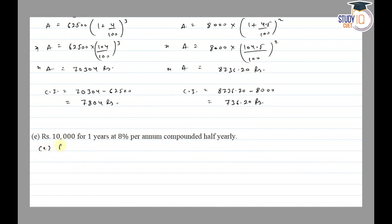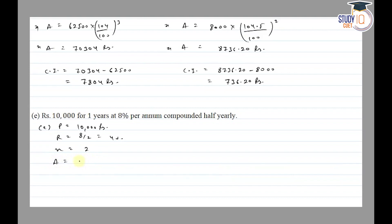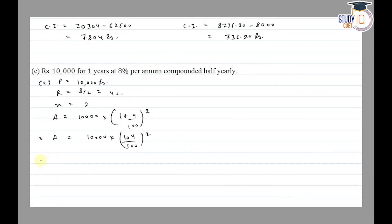In Part E, Principal given is ₹10,000, compounded half yearly. Half yearly rate is 8 divided by 2, equal to 4 percent, and for 1 year there are 2 half-yearly periods. Amount is equal to 10,000 into (104/100) squared, which gives ₹10,816. CI is equal to Amount minus Principal, so ₹816.